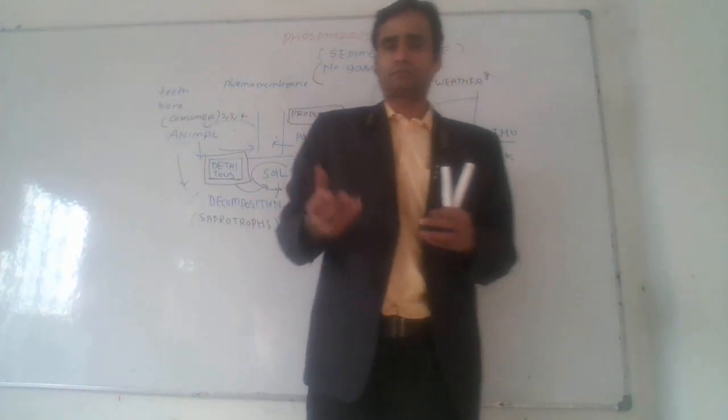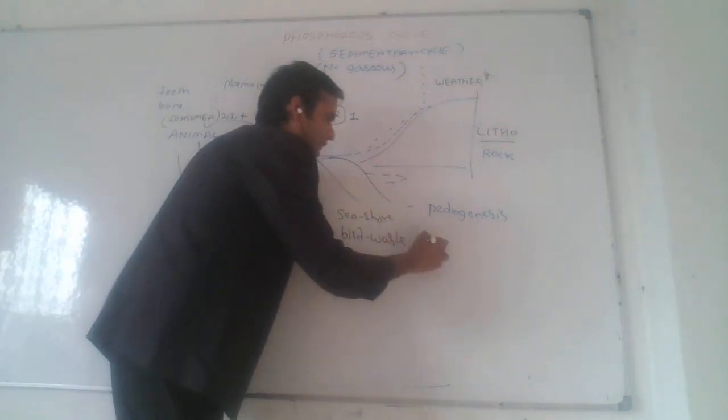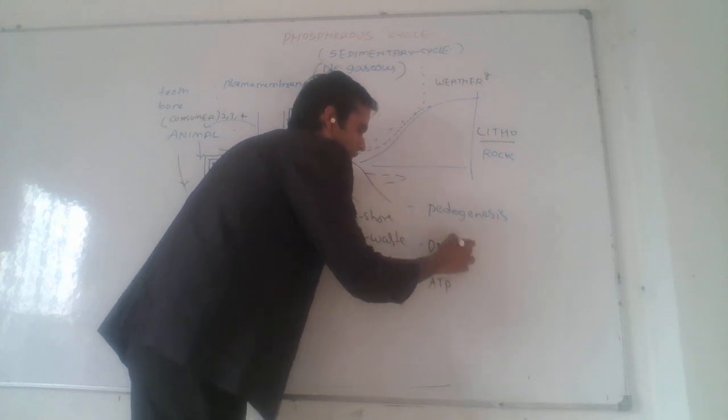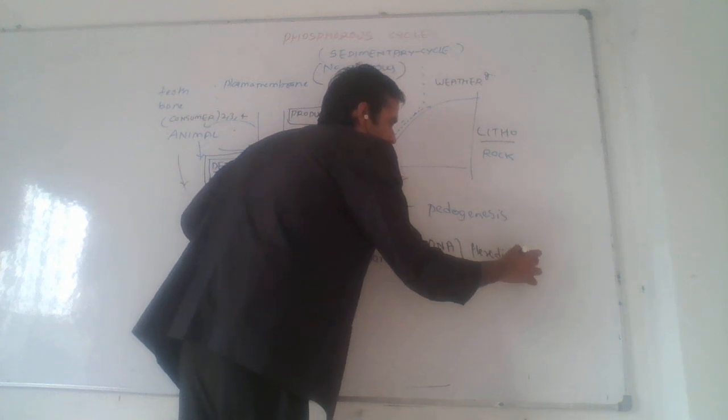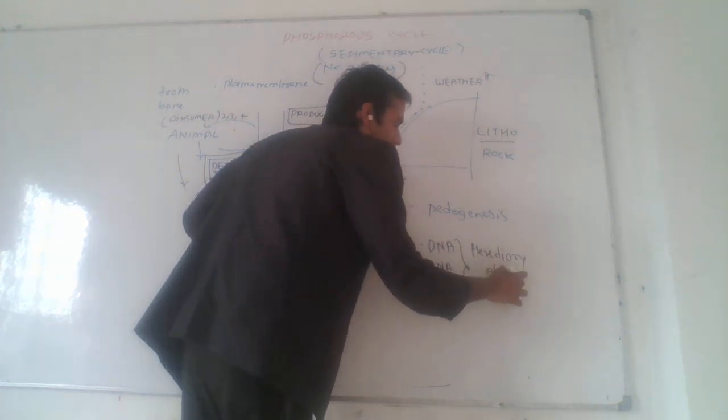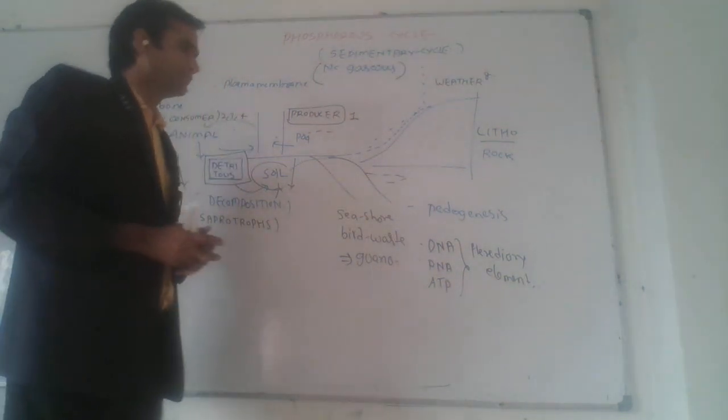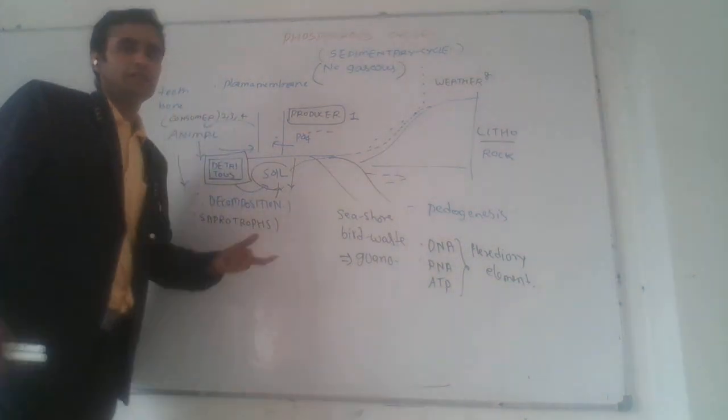Phosphorus plays important roles in DNA, RNA, and ATP. It is used in hereditary events and the transfer of information through nucleotides in DNA, RNA, and ATP. So phosphorus is a most important element.